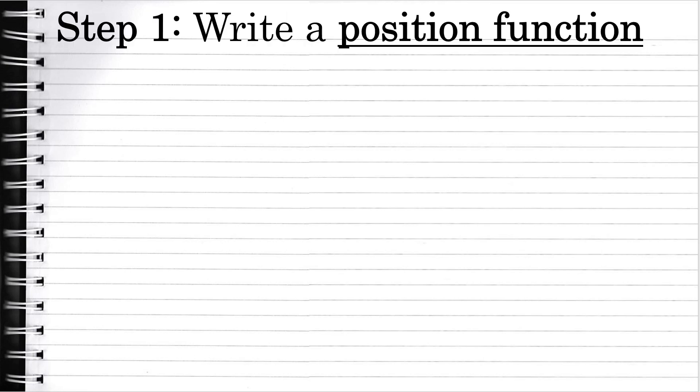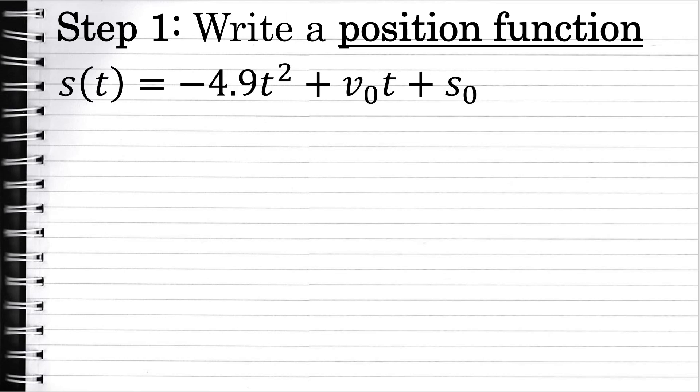Solving this problem can be broken down into four steps. The first step would be to write a position function — a function which describes the object's location at any point in time. A position function will have this form: s of t equals negative 4.9 t squared plus v sub 0 times t plus s sub 0.